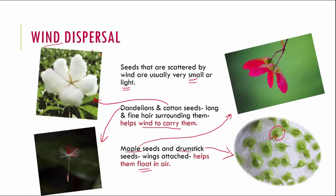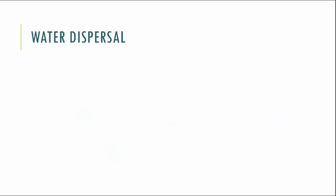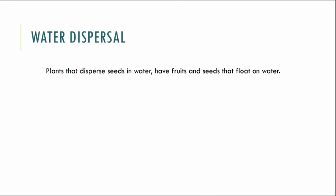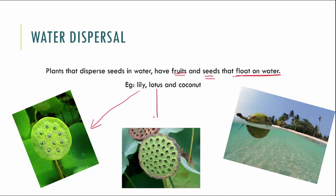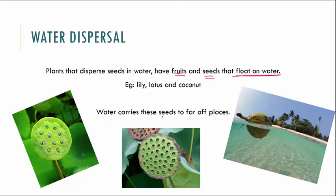The next method of dispersal is water dispersal. Seeds of plants that grow in or around water are generally dispersed by water. These plants have fruits and seeds that float on water. Examples are lily, lotus and coconut. The coconut fruit has air trapped in its husk, which makes it easy to float in water. This water carries the seeds to very far away places from the mother plant.